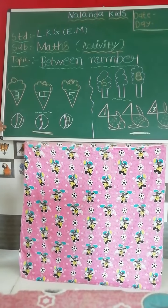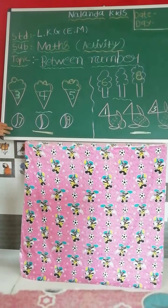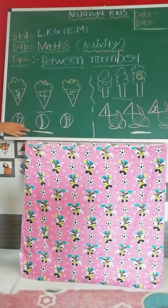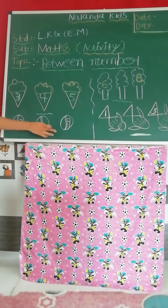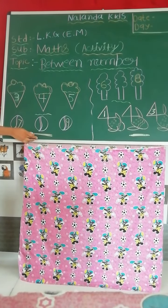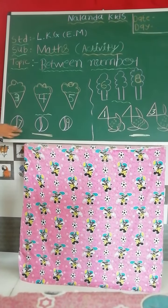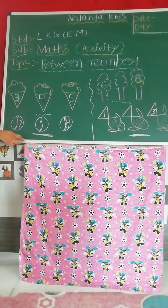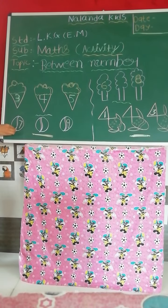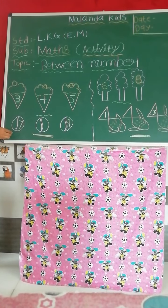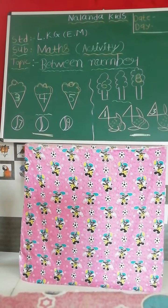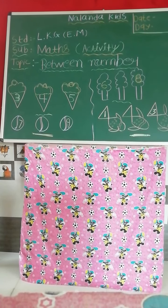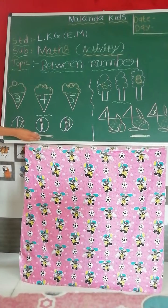Our next number is 7 blank 9. So which number comes between 7 and 9? Let's count from 1 to 10: 1, 2, 3, 4, 5, 6, 7, 8, 9. Which number came between 7 and 9? 8!